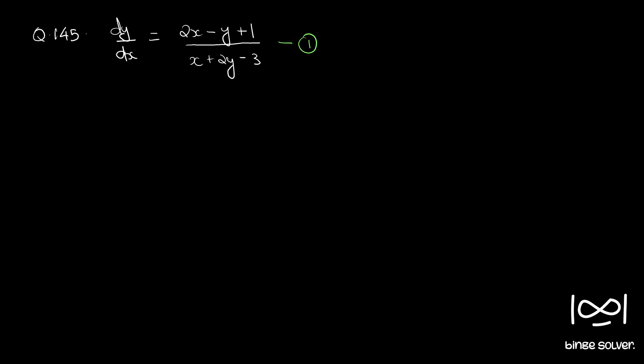Question number 145: dy/dx is equal to (2x minus y plus 1) by (x plus 2y minus 3). This is the given equation, let's call it Equation 1. This equation is not a homogeneous equation; we have to convert it to a homogeneous form and then solve it.